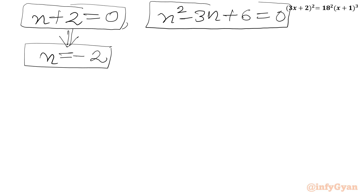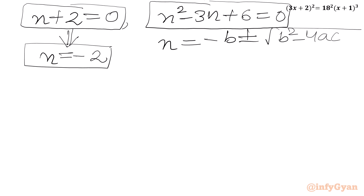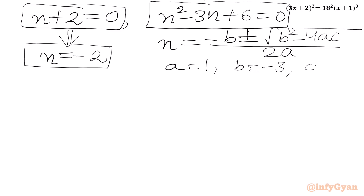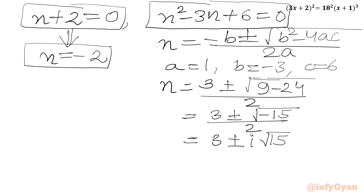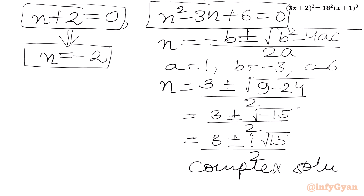Now we will consider the quadratic equation n² - 3n + 6 = 0. Using the quadratic formula with a = 1, b = -3, c = 6: n = (3 ± √(9 - 24)) / 2 = (3 ± √(-15)) / 2 = (3 ± i√15) / 2. The roots are complex, so we reject this quadratic equation and accept n = -2.